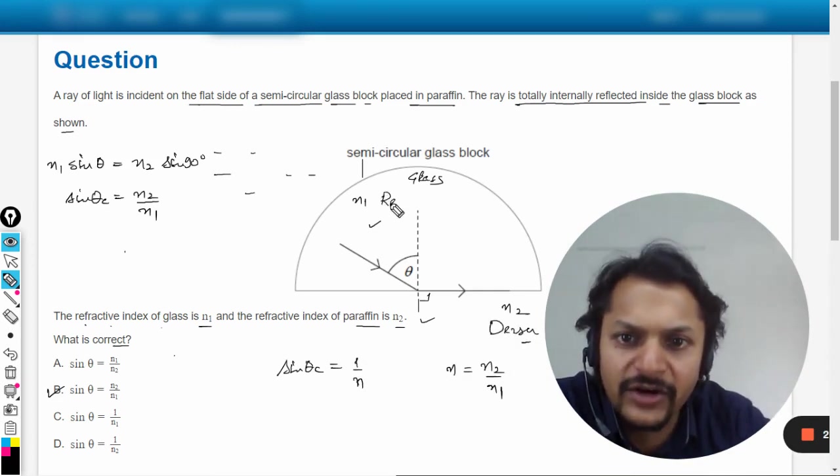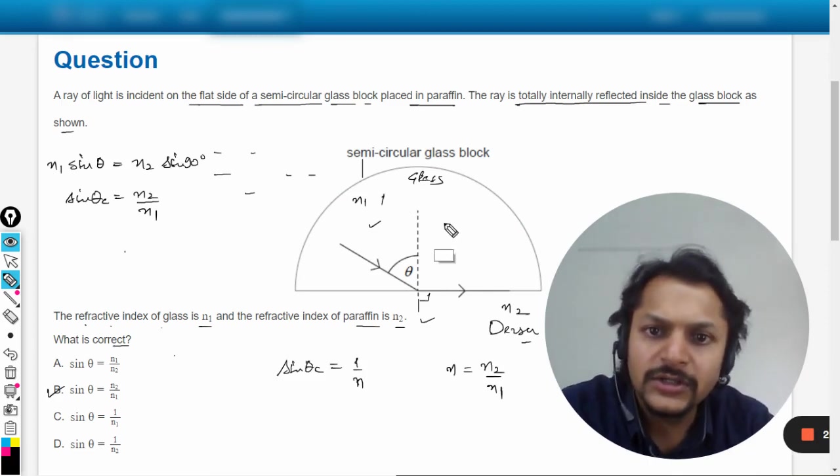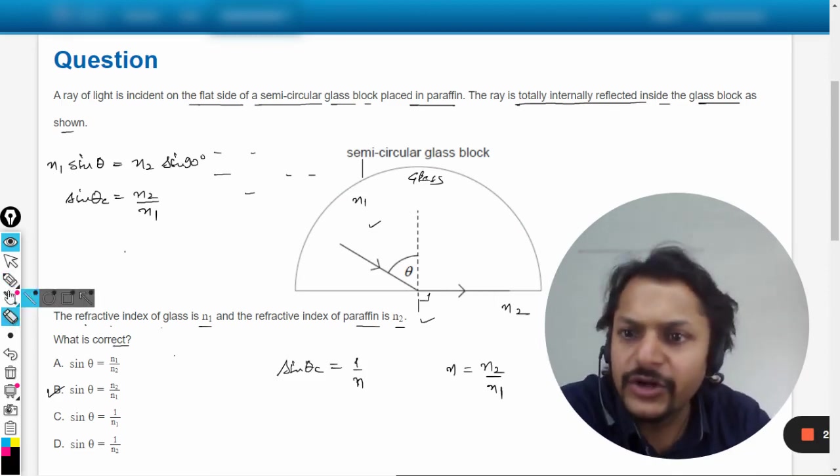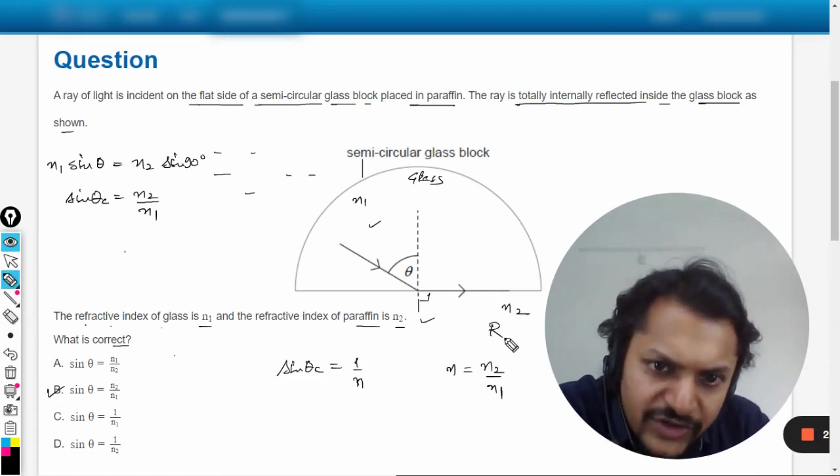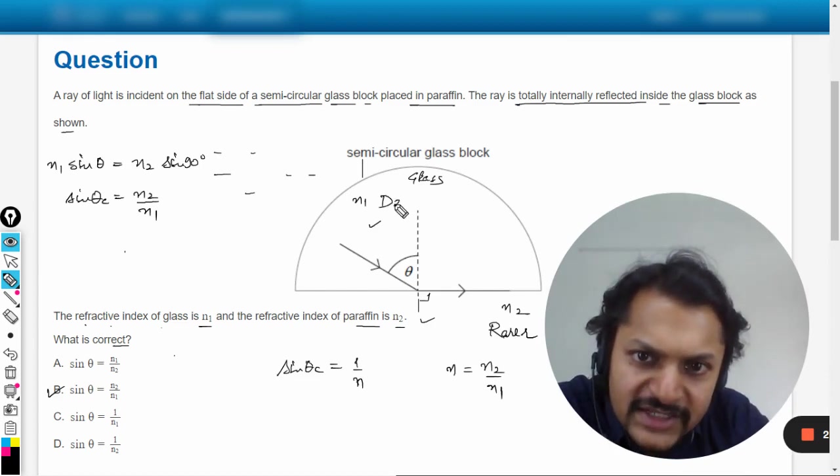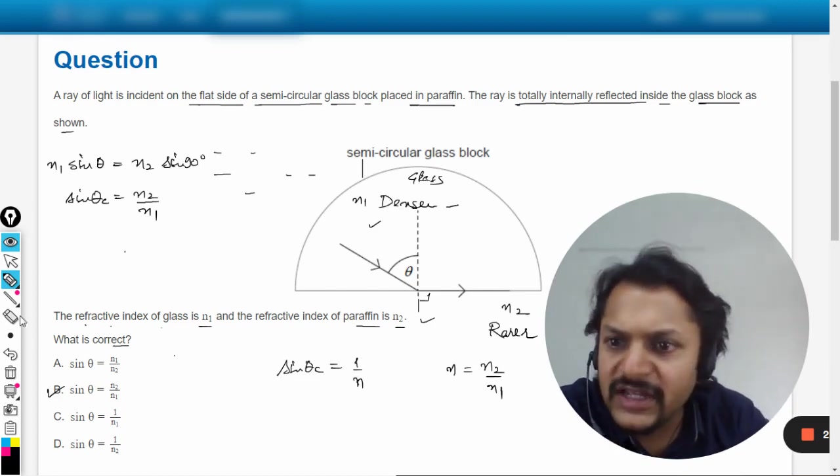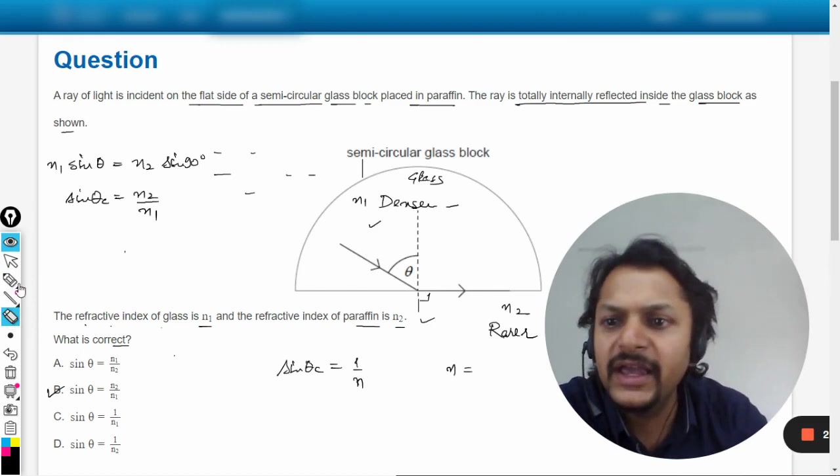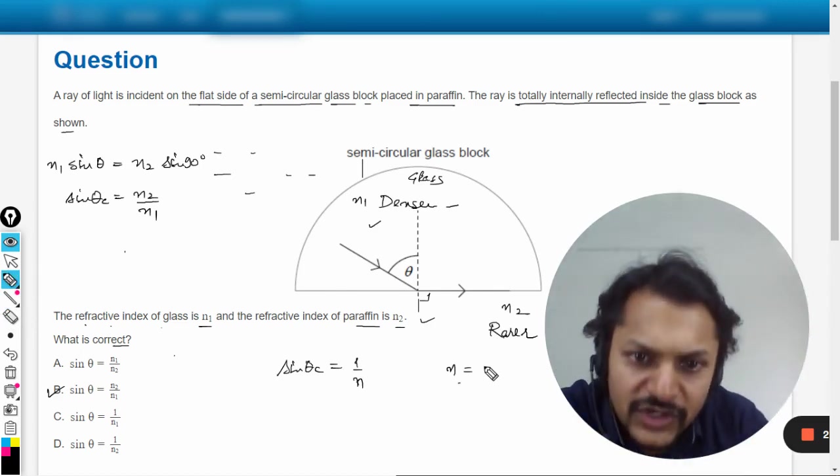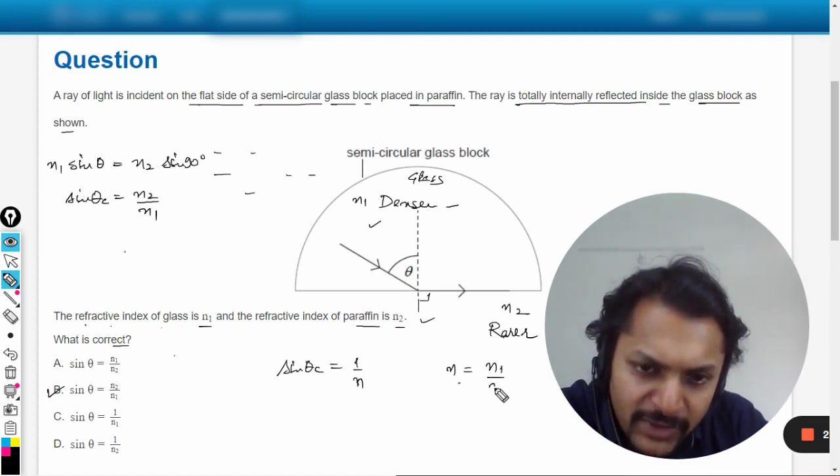Sorry, I'm mistaken here. Sorry, n2 is rarer because they have just named it n2, that is why I was confused. This is now denser. So basically n can be replaced by the refractive index of denser divided by rarer. So it would be, in this case, it would be n1 by n2. But in other cases generally it is n2 by n1.